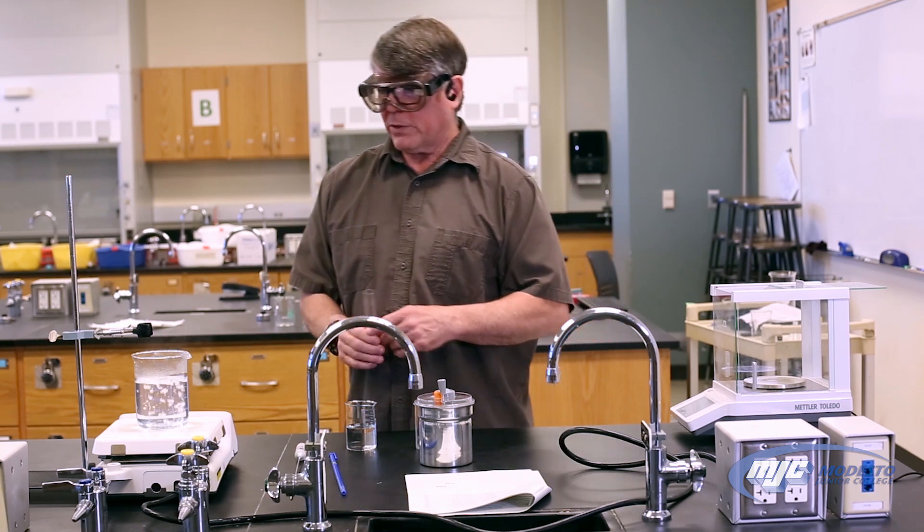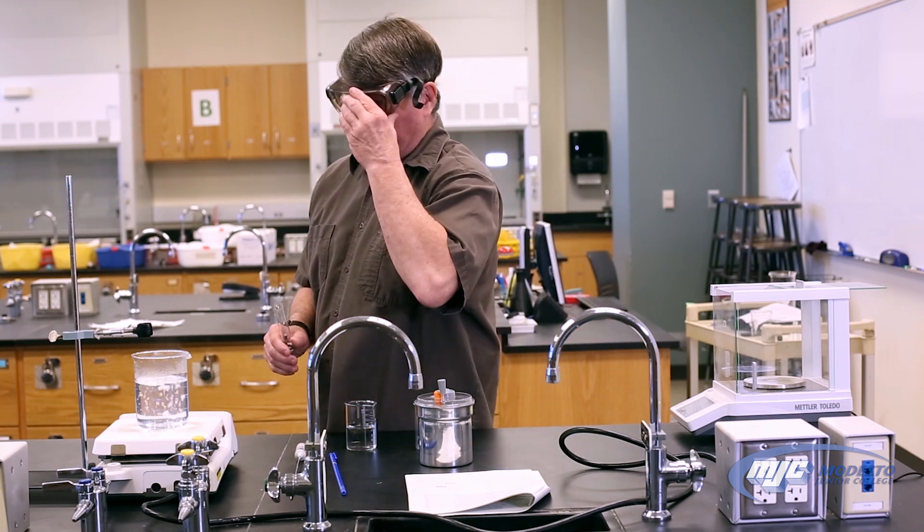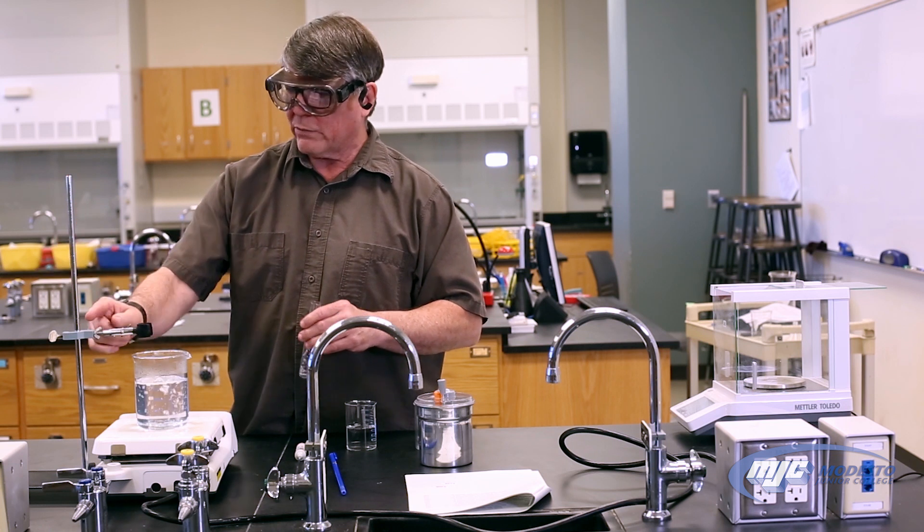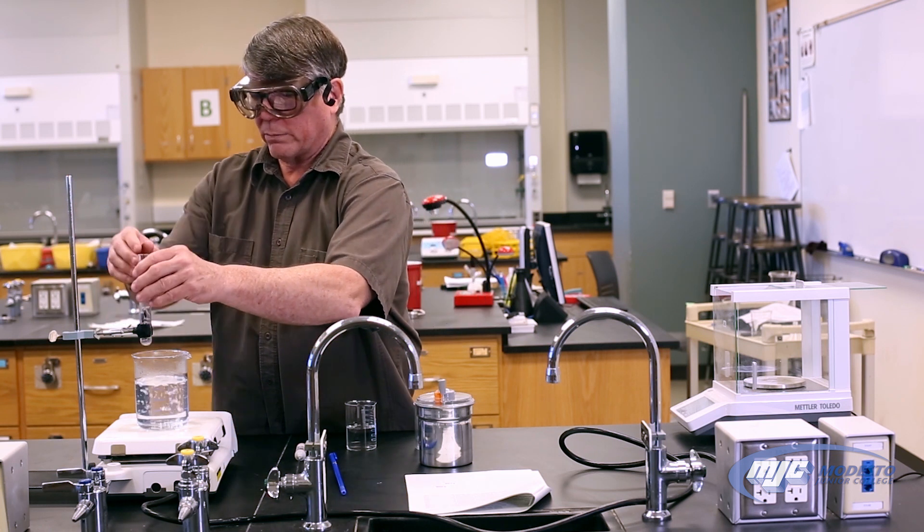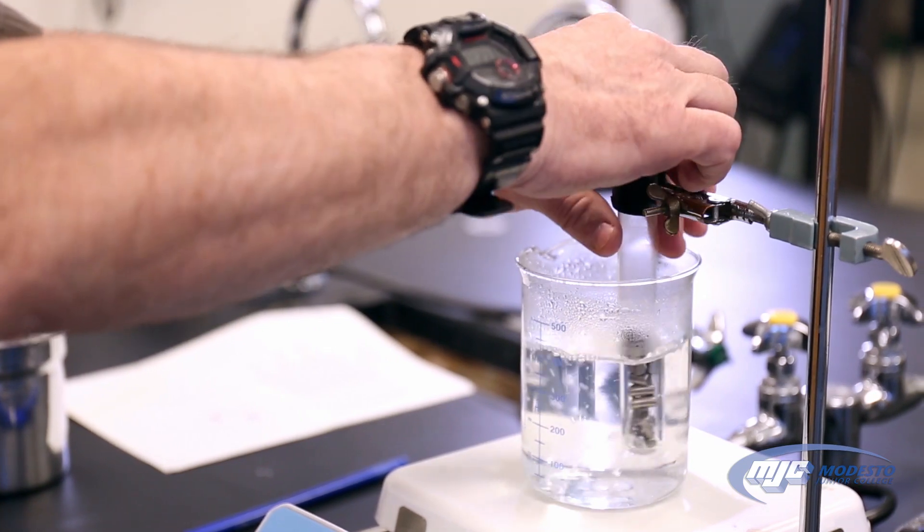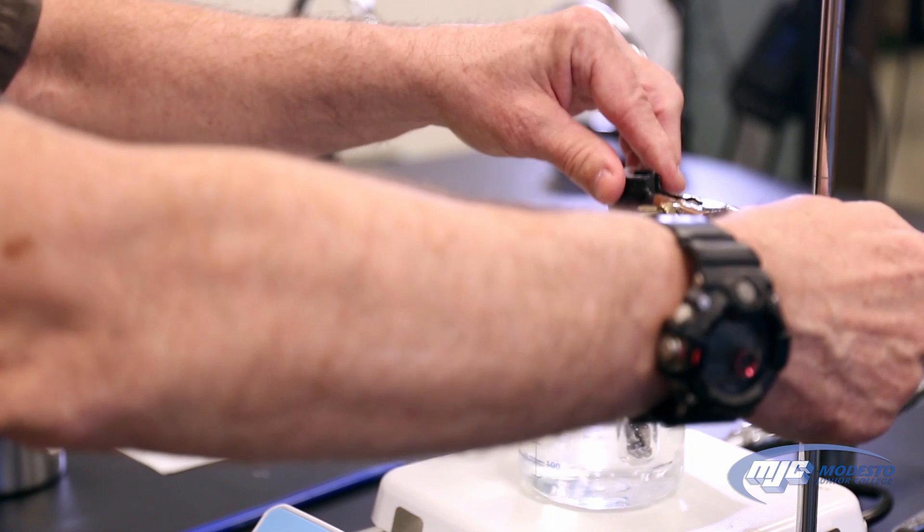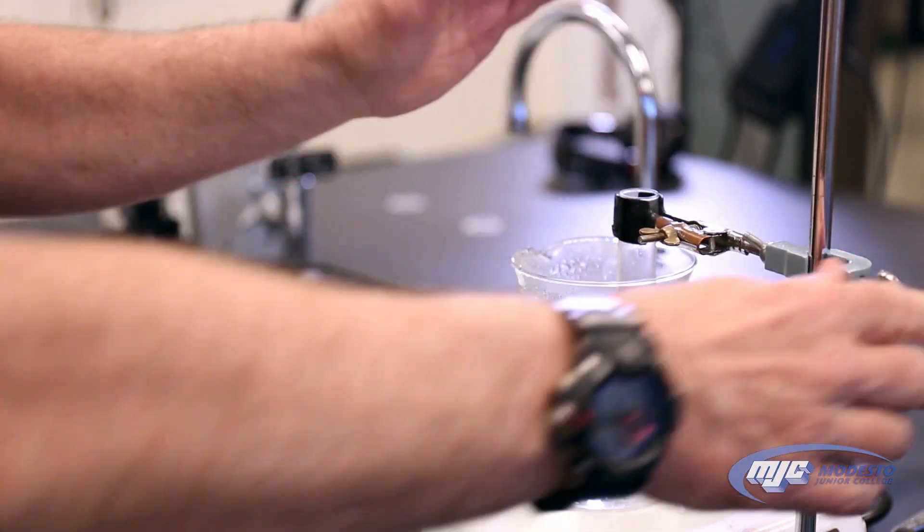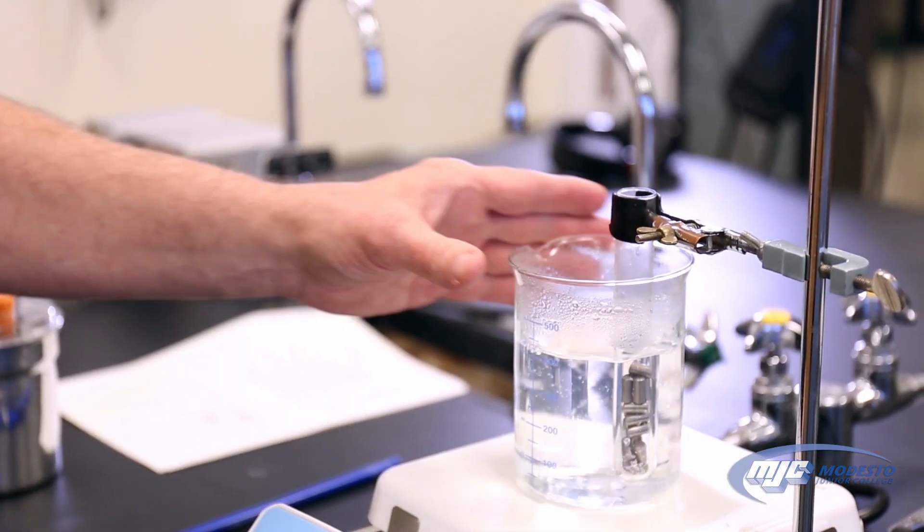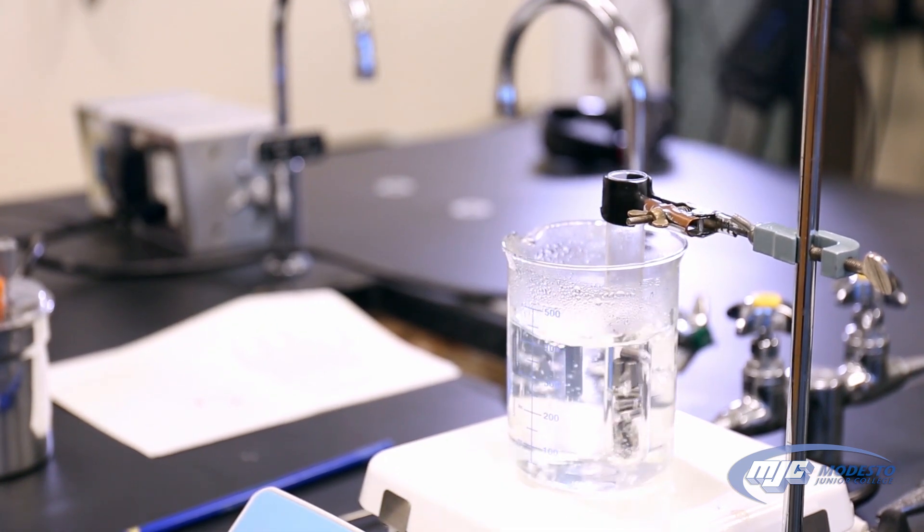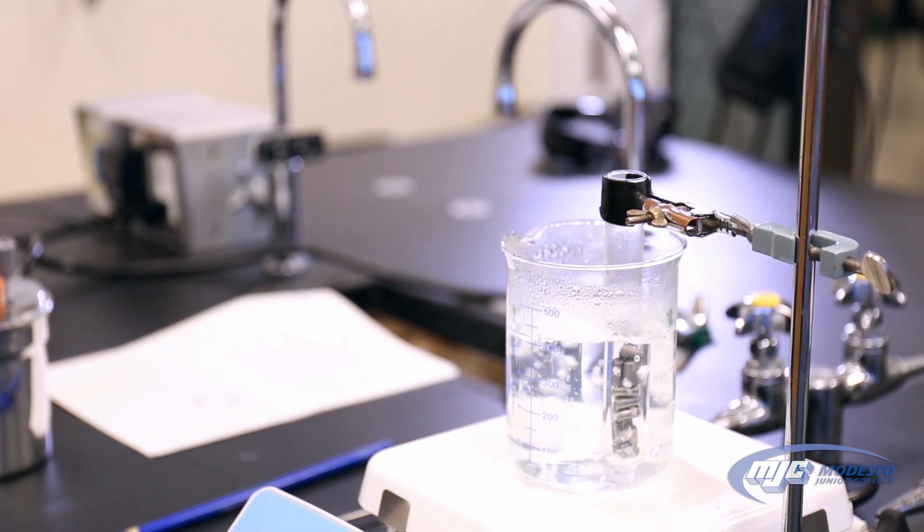And now what we're going to do is we have a beaker of boiling water over here on the hot plate. We're going to take a ring stand and a clamp and clamp the metal into the boiling water. All the way down. Submerge all the way down. Clamp it on here. And then lower it down. We don't want to touch the bottom of the beaker but we want to get it all the way submerged. Now we're going to let that sit over there and heat for a while while we take a couple of other measurements.